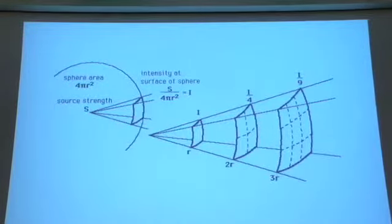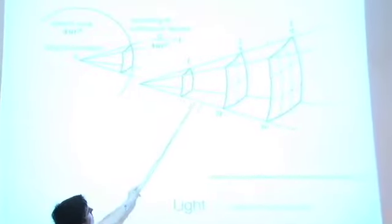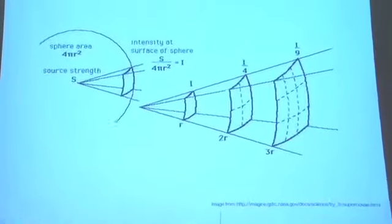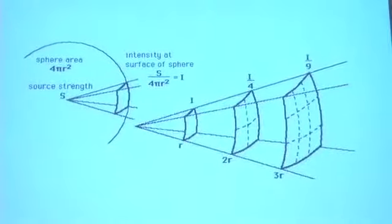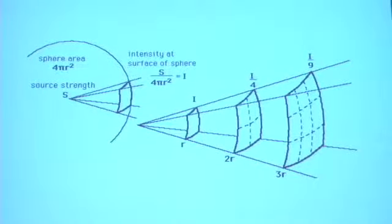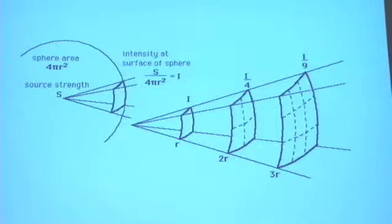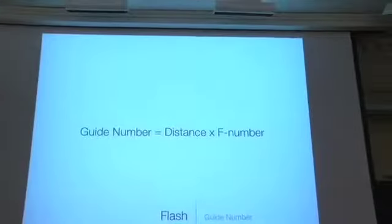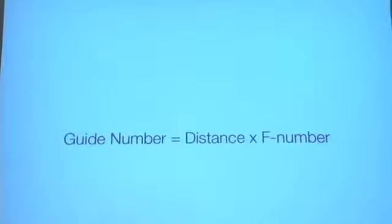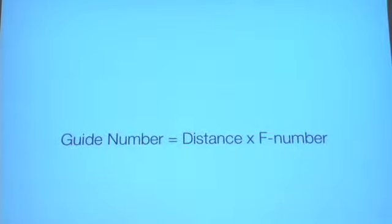This is a big problem for us in terms of flashes. There is yet another equation that flash manufacturers use to try to tell you how powerful their flashes are. If you can imagine there is a particular range — say this flash is powerful enough to properly illuminate something all the way to maybe three feet away — flash manufacturers try to tell you how powerful they are using something called the guide number. The guide number is equal to the distance times the F-number.